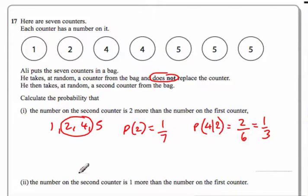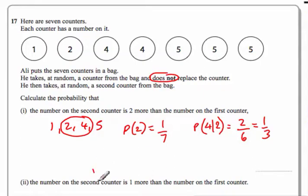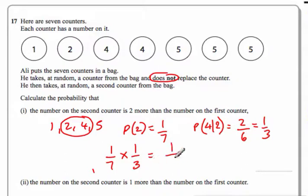So what we're saying is: what's the probability of getting a two and then a four? We're using the word 'and', so we need to multiply these together. I'm going to do one seventh times one third, which gives me one over twenty-one.